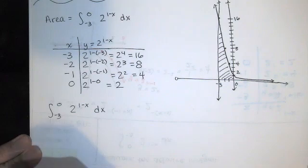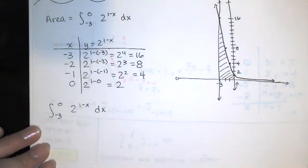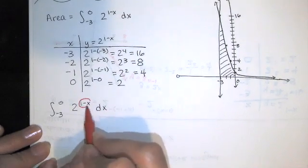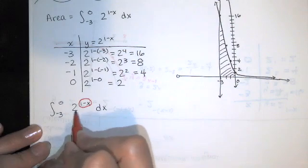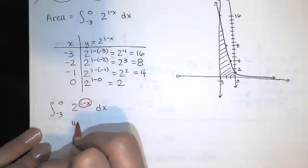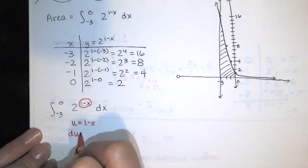So whenever you're doing u-substitution, you're looking for a function nested inside of another function. And I see I've got this 1-x in the exponent of the exponential with base 2. So I'll let that be my u. I'm never 100% sure it's going to work until I compute du. So I compute du.